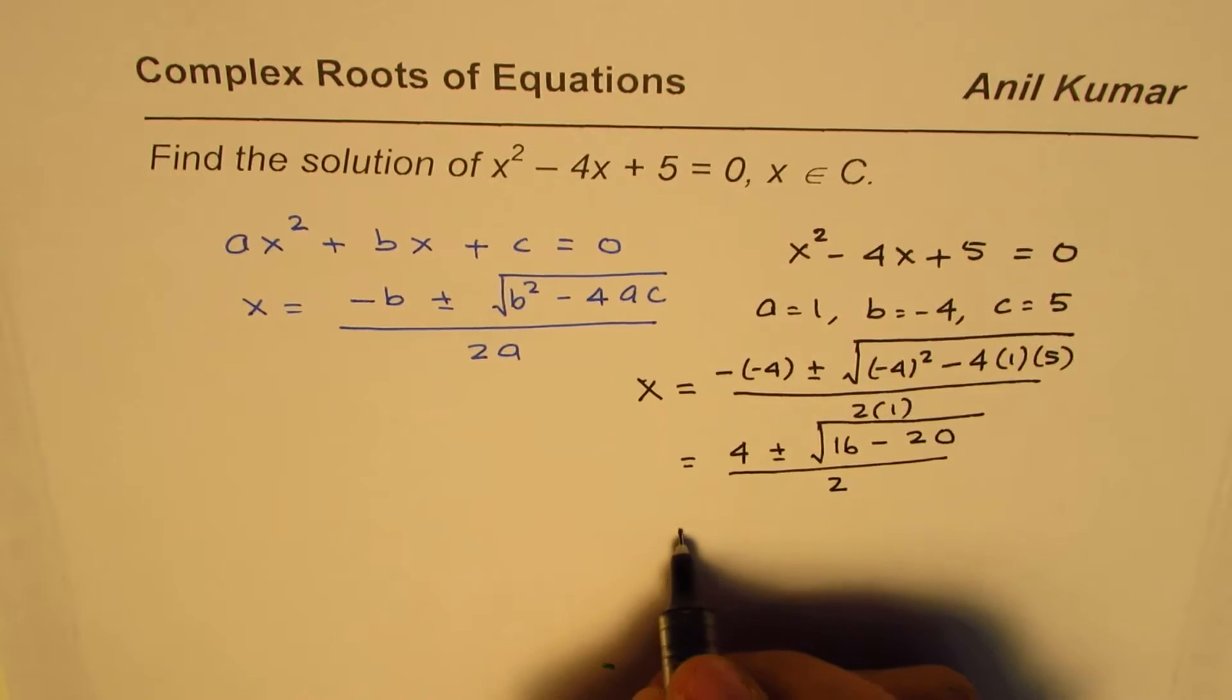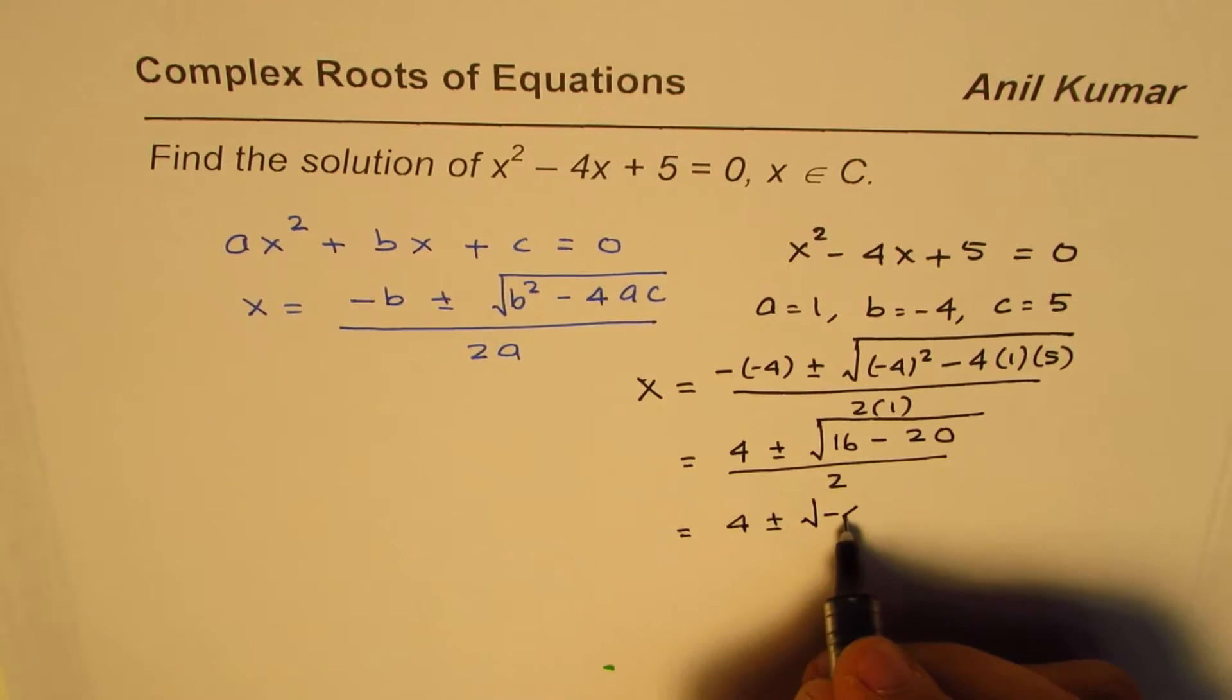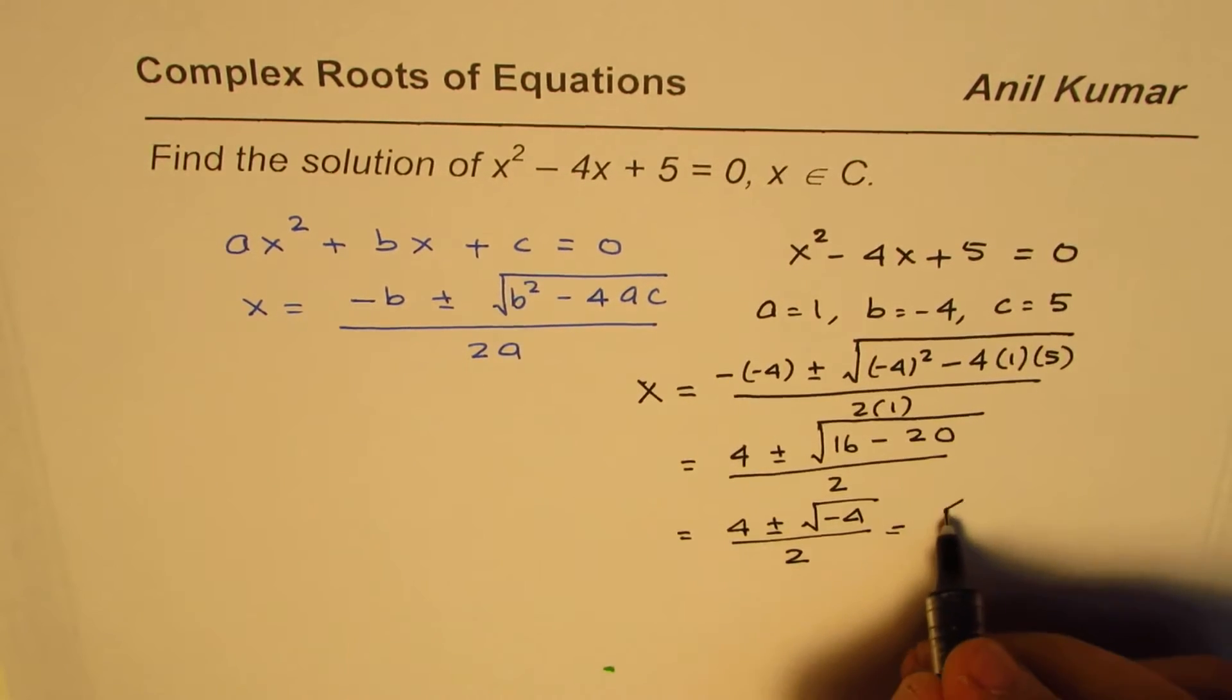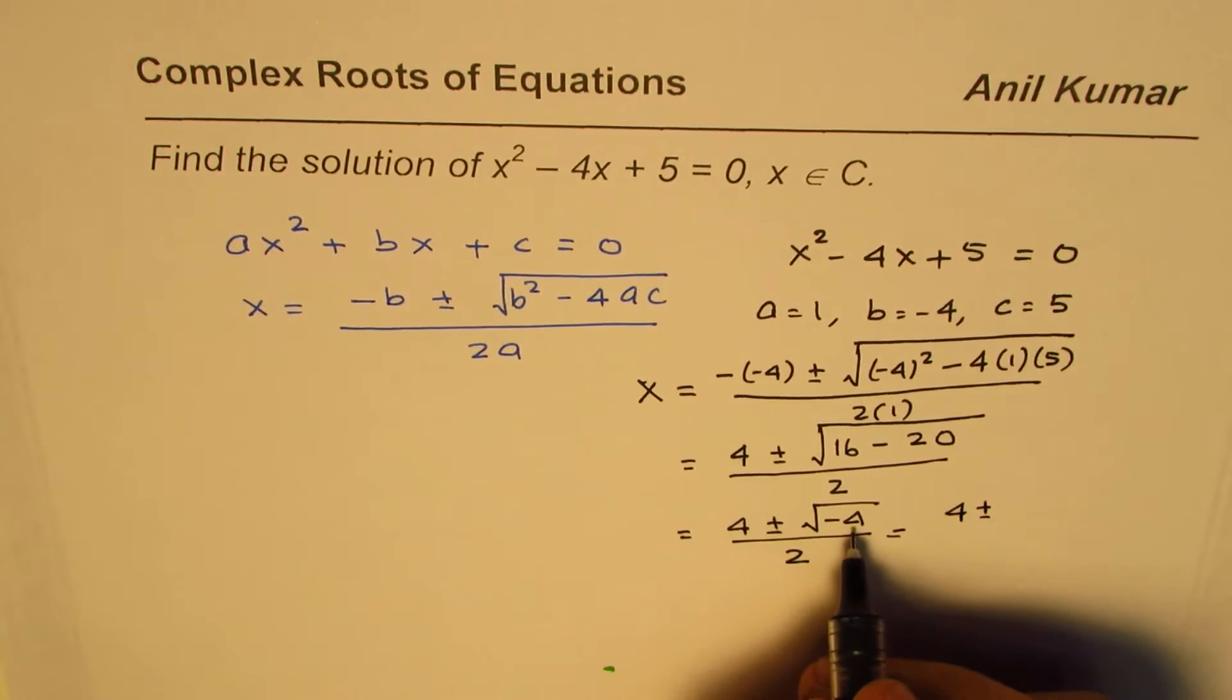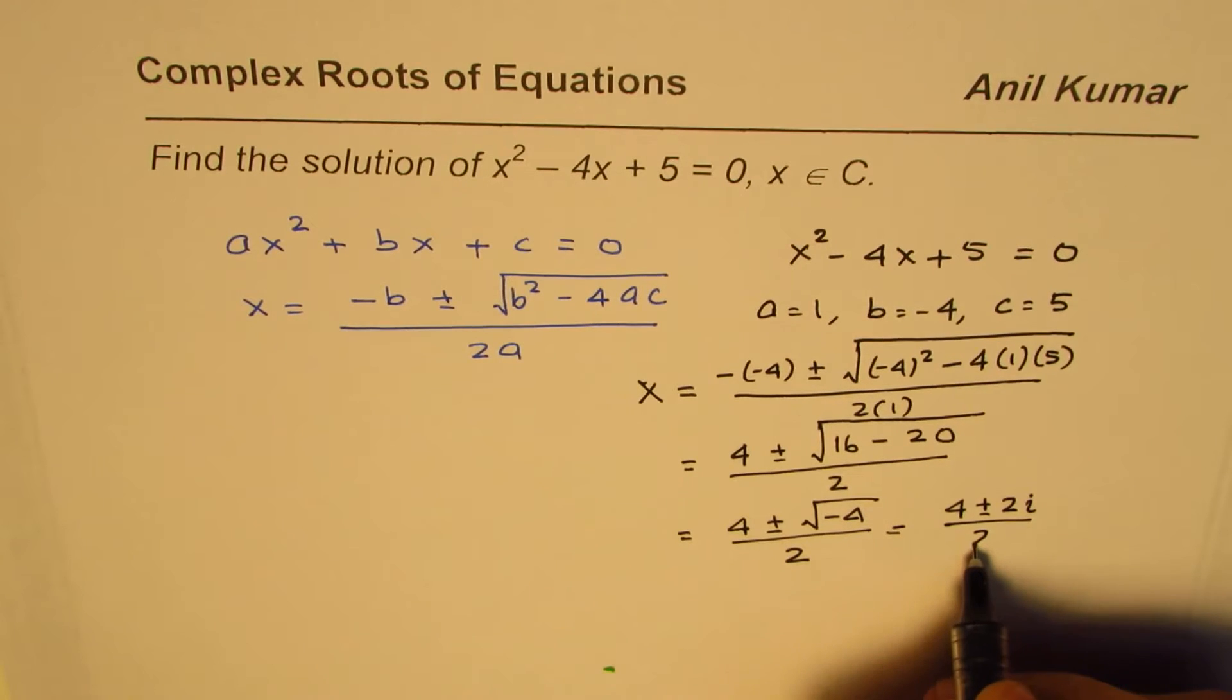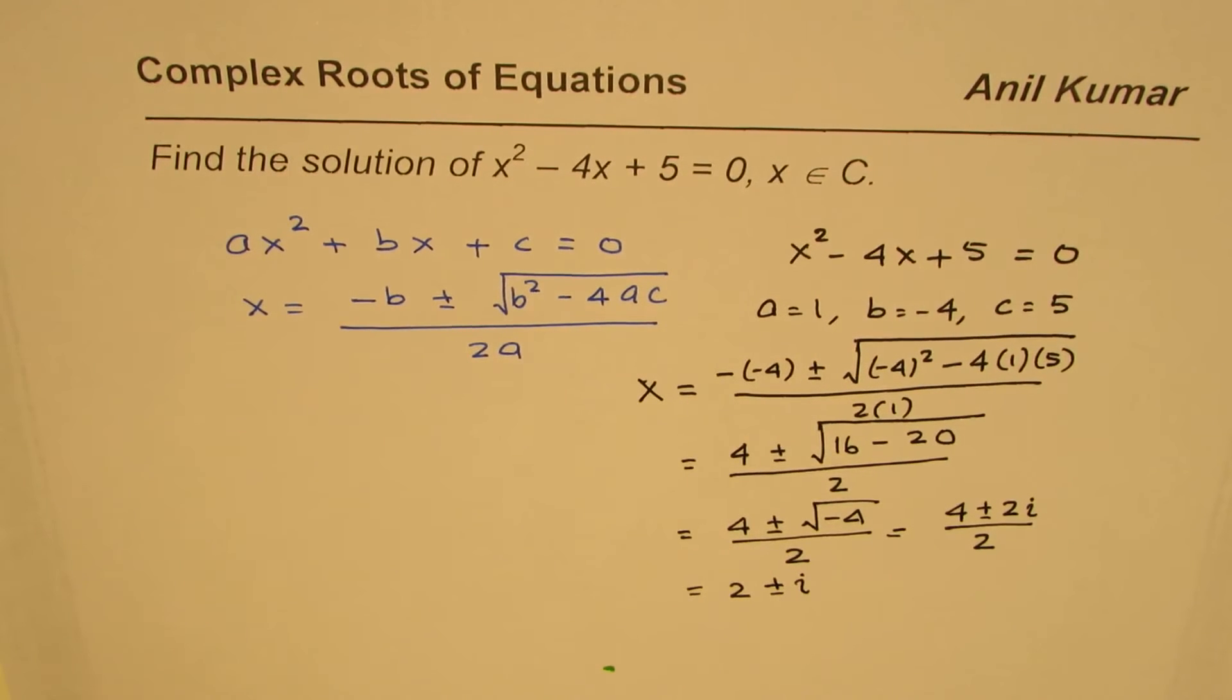Now here we get 4 ± √(-4). Square root of negative is i, so we can write this as 4 ± 2i, and square root of 4 is 2, so we get 2i divided by 2. When you divide them by 2 you get 2 ± i, so we get 2 roots for this equation.